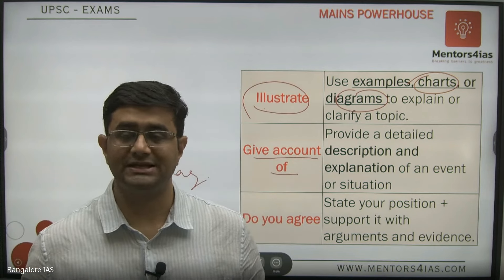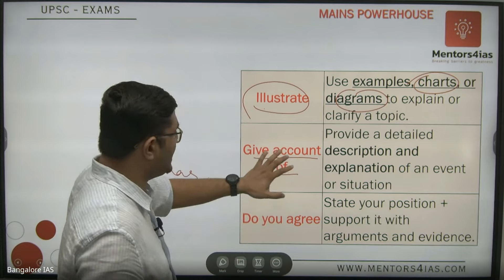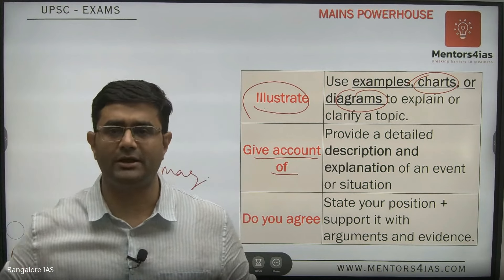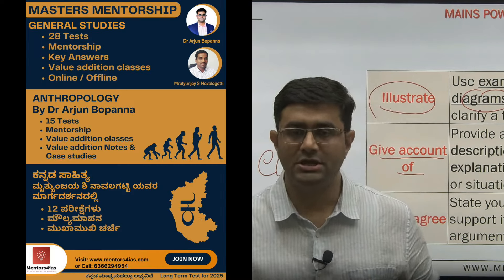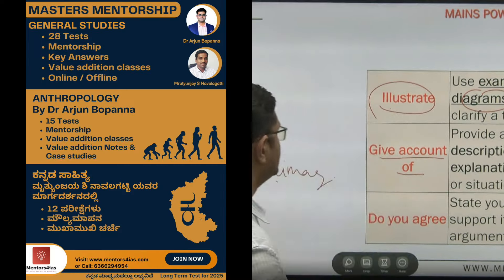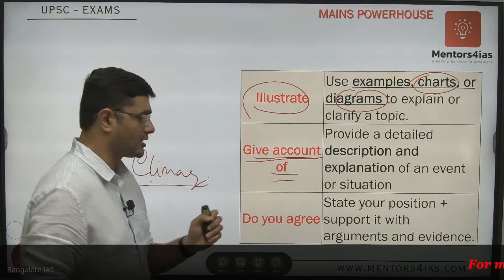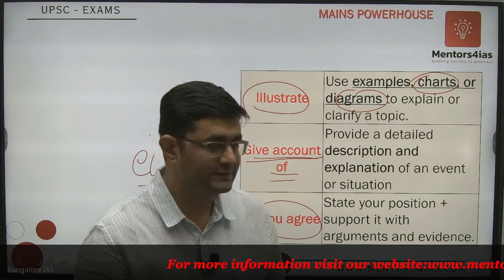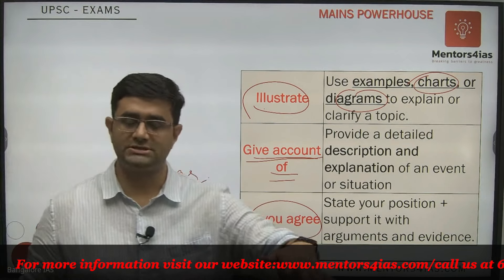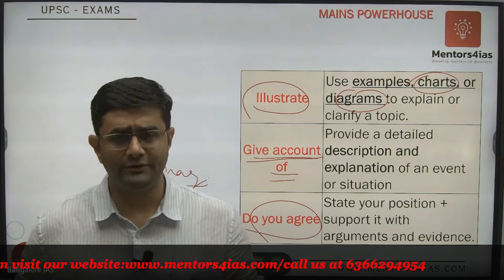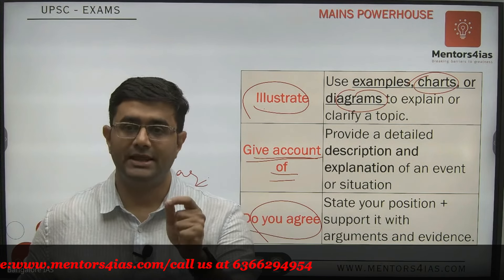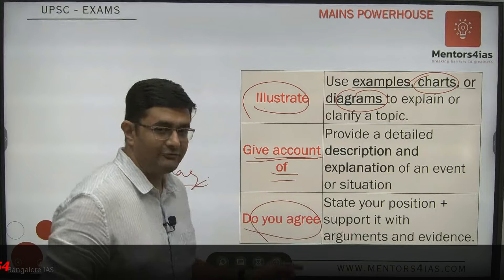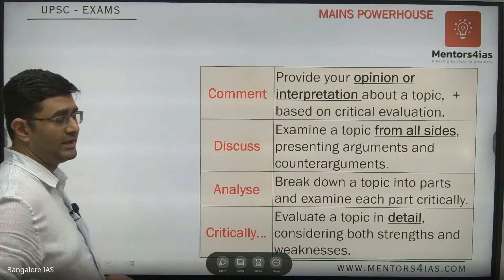'Give an account of' is a detailed explanation, like 'describe.' Give an account of climate change means you write every aspect — you define it, talk about the cause, explain the impact, cover everything. Next, 'do you agree' also asks for your opinion. For example: does climate change affect the economic system of the world? You give your opinion — yes or no — but you must justify it with reasons and arguments. It cannot be a one-word answer.